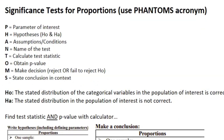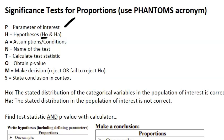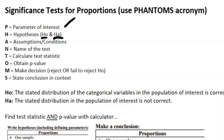For significance tests for proportions, you use the PHANTOMS acronym. The P is your Parameter of interest, same as confidence intervals. H is for Hypotheses: your null hypothesis H₀ is the stated distribution or claim, and your alternative hypothesis Hₐ is that the stated distribution is not correct. Think of it as: your null is what they claim, and your alternative is what you're trying to prove if there's significance.